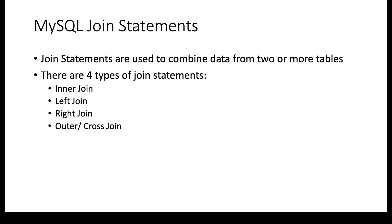Joins are used to combine data from two or more tables and there are typically four types of join statements. The first type is called the inner join, the second is called the left join, the third is called the right join, outer join, and cross join. In this video I'll explain exactly how inner join, left join, right join, and so on work. We'll look at the syntax and then go right into the demos.